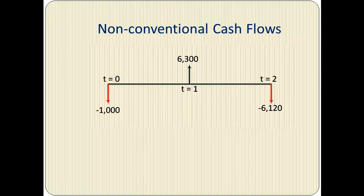Next we have a non-conventional set of cash flows. The initial cash flow is negative $1,000, which is an outflow. The cash flow at T equals 1 is positive $6,300 — that's one sign change. The cash flow at T equals 2 is negative $6,120, giving us a second sign change. So there are two sign changes, making this a non-conventional set of cash flows.